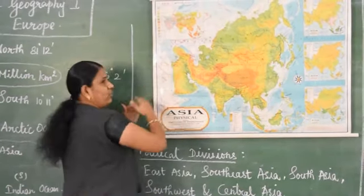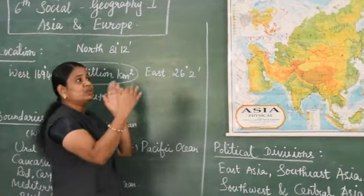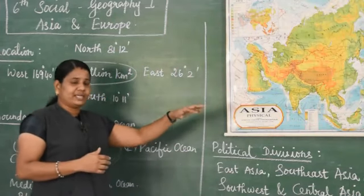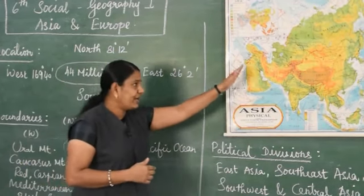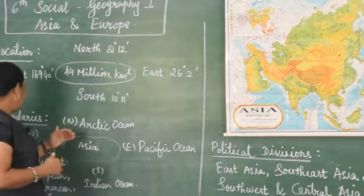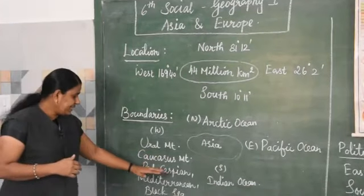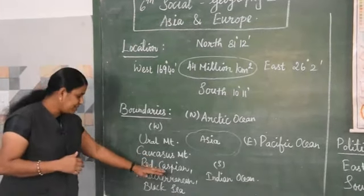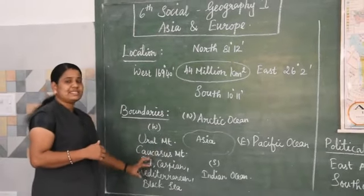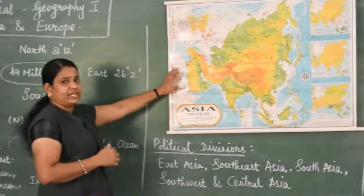When we see the west side, the Europe continent is also located. So between Europe and Asia, many rivers, seas and mountains are located. On the west side, which mountains are located? Here I have mentioned Ural Mountain, Caucasus Mountain, Red Sea, Caspian Sea, Mediterranean Sea, Black Sea. These are the seas and mountains located in the west side.